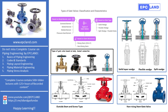The welded bonnet type is used when there is no need to open the valve for maintenance. It is lighter in weight and provides a permanent seal. The pressure seal bonnet design is used for high pressure and high temperature services. The higher the pressure inside the valve, the tighter the seal becomes.